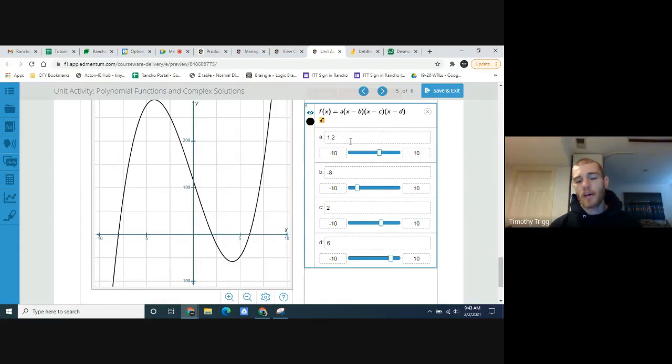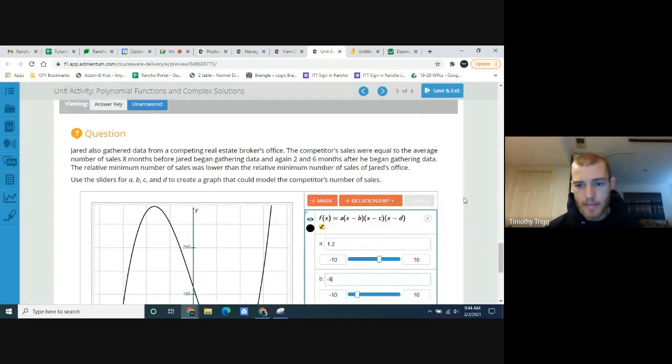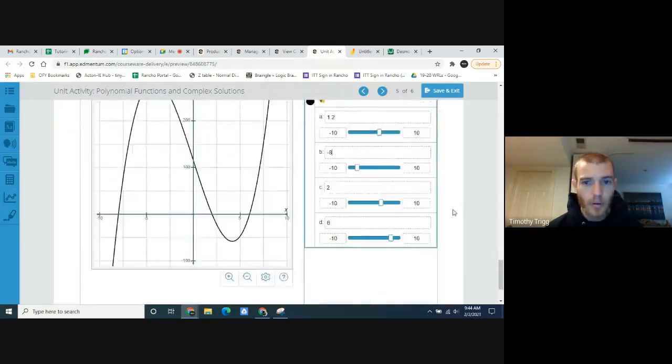Okay? So any a value, probably around 1, 1 point something, that will be great. Okay? But these b, c, and d need to be exactly these values. Not necessarily in this order, but they have to be these values, negative 8, 2, and 6, because that's the numbers they wanted. Eight months before, two and six months after. Okay. And that's it.